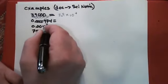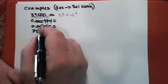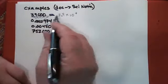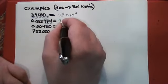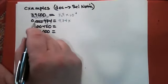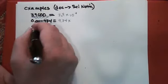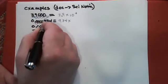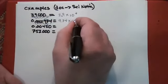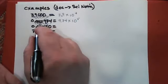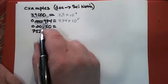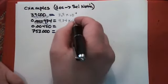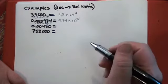For the next number, 0.0000974, obviously the 9, 7, and 4 count as significant figures. But zeros at the beginning of a number never count as significant figures, so that has three significant figures. That's going to be 9.74 times something. The decimal point starts out on the left, and to get the number between 1 and 10, we move the decimal five times to the right. In moving the decimal point we made the number bigger, so we have to make the exponent negative to compensate. This is 9.74×10⁻⁵.